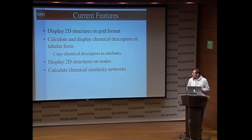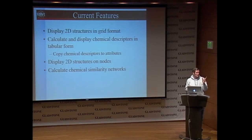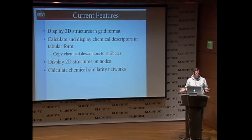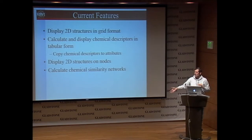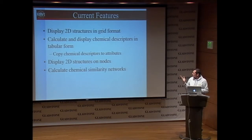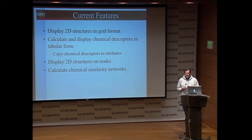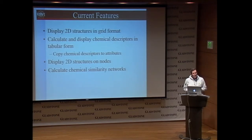The current features of ChemViz: it allows you to display 2D structures in grid format — you enter the structure as an attribute, a SMILES string. It calculates and displays a wide variety of chemical descriptors, which you can show on a table or put in your Cytoscape attributes so they get saved with the session. You can display 2D structures on nodes, and you can calculate chemical similarity networks using fingerprints and a Tanimoto coefficient, which is very common in cheminformatics.